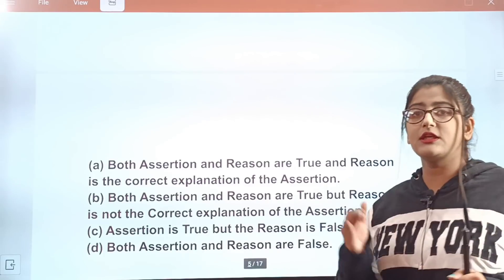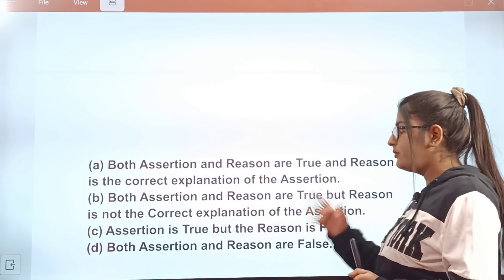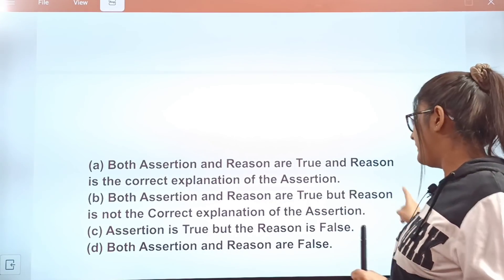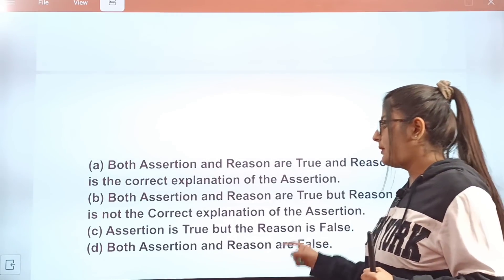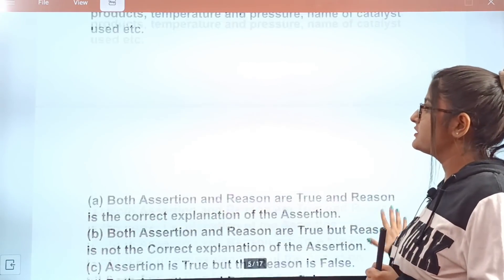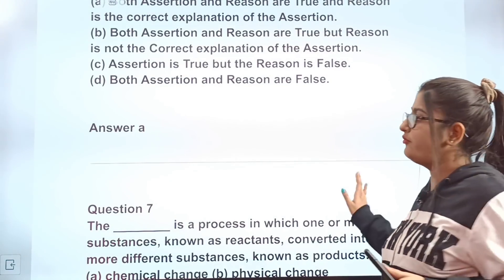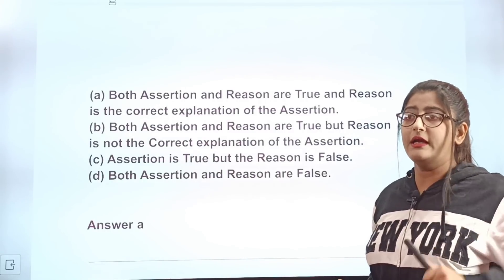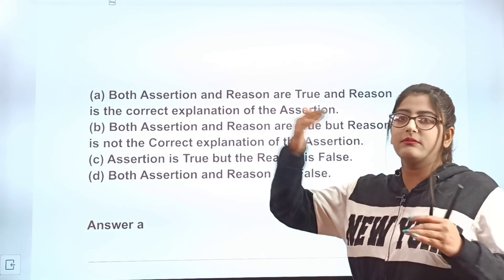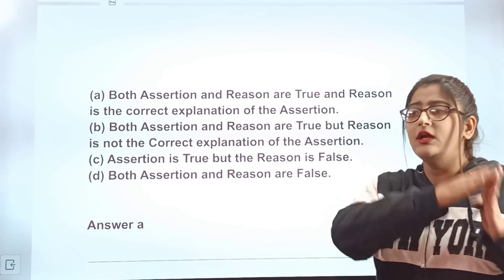The correct answer is A — both assertion and reason are true, and the reason is the correct explanation of the assertion. The reason explains that we can make chemical equations more informative by including details like temperature, pressure, catalyst use, etc. Let's move on to question number 7.